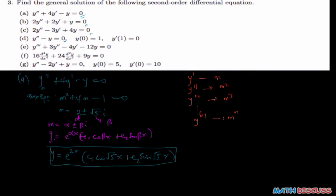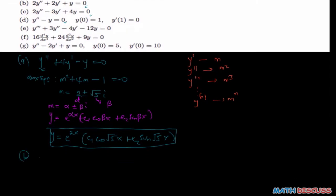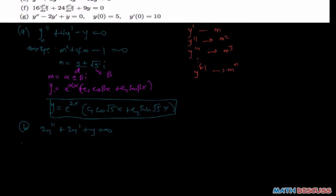For the second equation: 2y'' plus 2y' plus y equals zero. Similarly, we form the auxiliary equation. So anywhere we find y we represent m, so we have 2m squared plus 2m plus 1 equals zero. When we solve this using the quadratic formula, we get m equal to negative one half plus or minus one half·i.